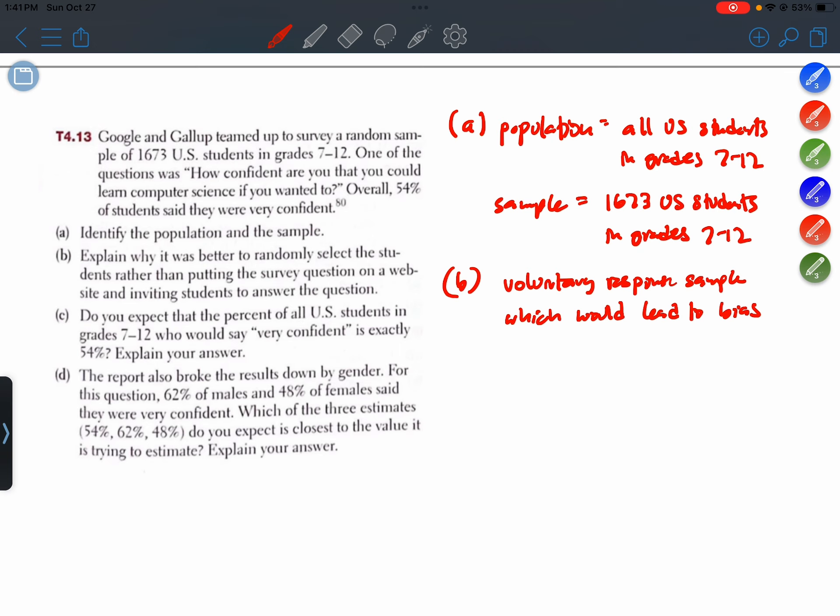So yeah, I think that this would lead to an overestimate. An overestimate of the percent of all students who would want to learn or who think they could learn computer science, which would lead to bias, slash overestimate of the true percent of students who think they can learn comp sci.